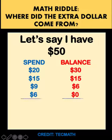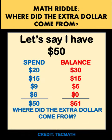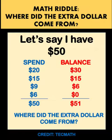If I get the total of each column, 20 plus 15 plus 9 plus 6 gives us $50 for the spend column. And 30 plus 15 plus 6 plus 0 gives us $51. What happened? There is an extra $1 here. Where did that extra dollar come from?